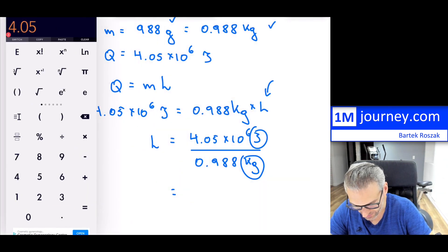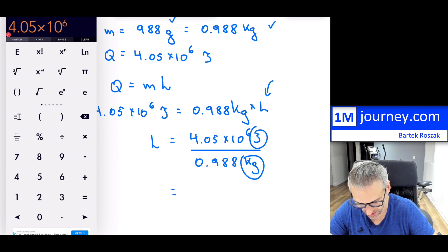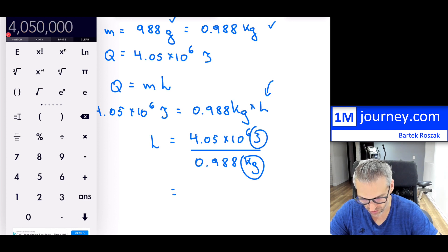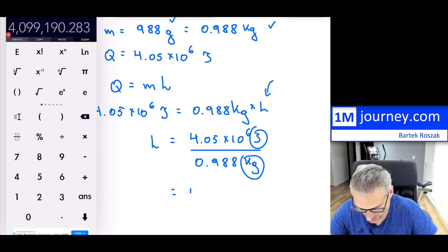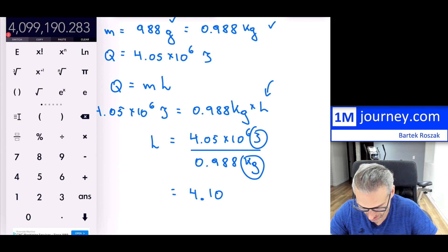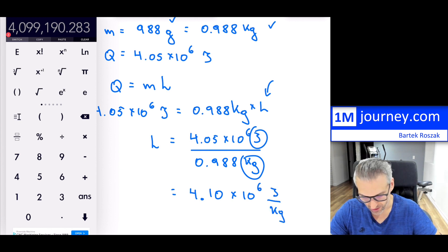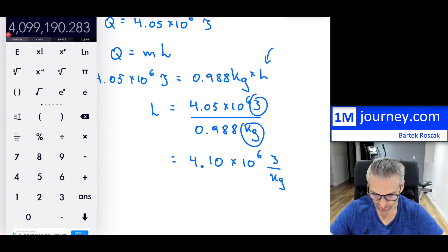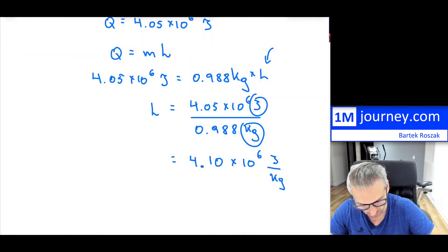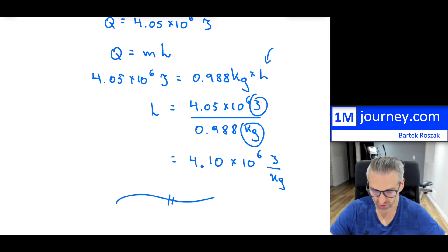So L equals 4.05 × 10⁶ joules divided by 0.988 kilograms. Notice we're going to have joules per kilogram, which is indeed the standard unit for latent heat. That gives us approximately 4.10 × 10⁶ joules per kilogram. You should be comfortable going back and forth in scientific notation as needed. That's your answer — if you need to round it to something else your teacher asks for, you can certainly do that.